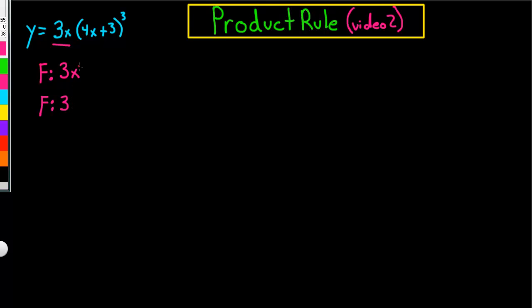Because if we add x to the first power, 1 times 3 is 3, and we drop the x, so you got 3. Alright, now for the g, it's going to be that whole thing. So we got 4x plus 3, all to the third power.